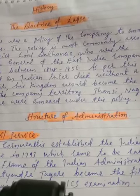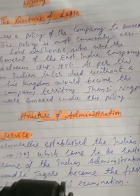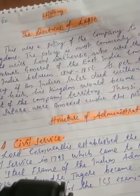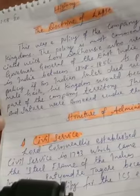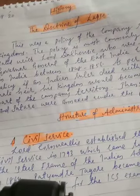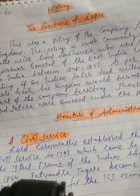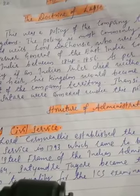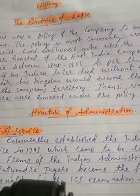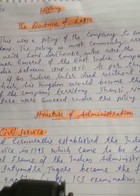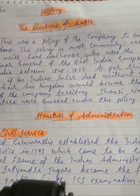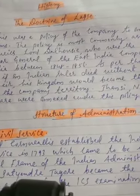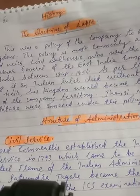As per the Doctrine of Lapse, if an Indian ruler died without a male heir or successor, his kingdom would become part of the company territory — that is, the East India Company. The right to adopt children was not accepted. Satara is one example of a kingdom annexed under this policy.